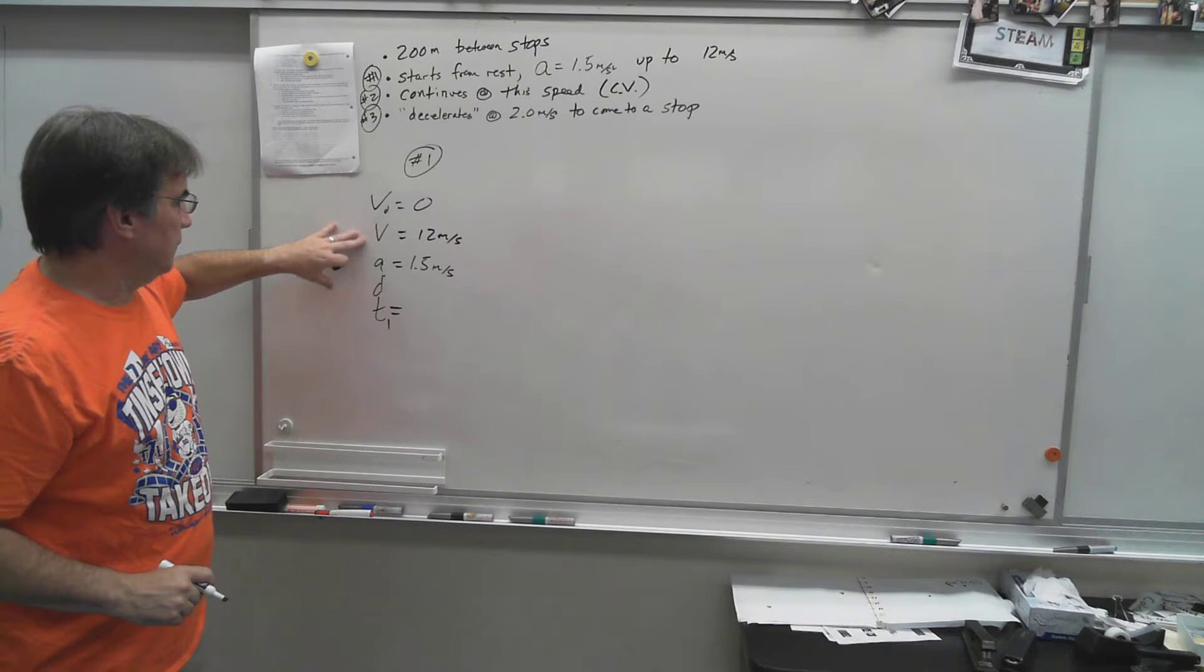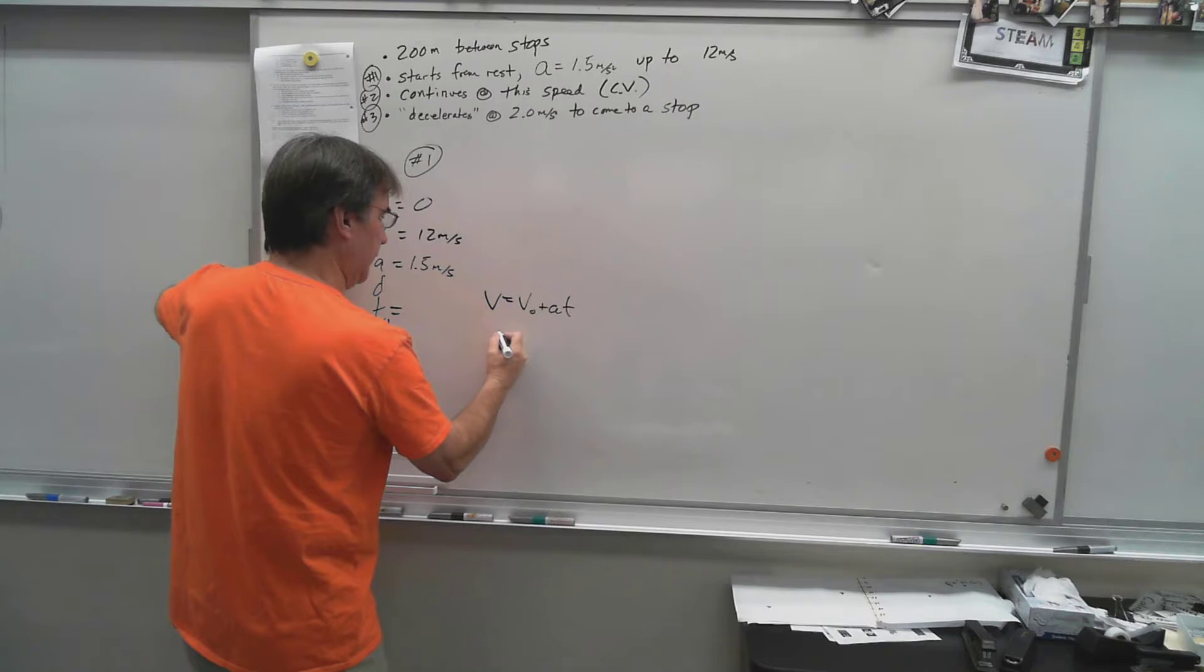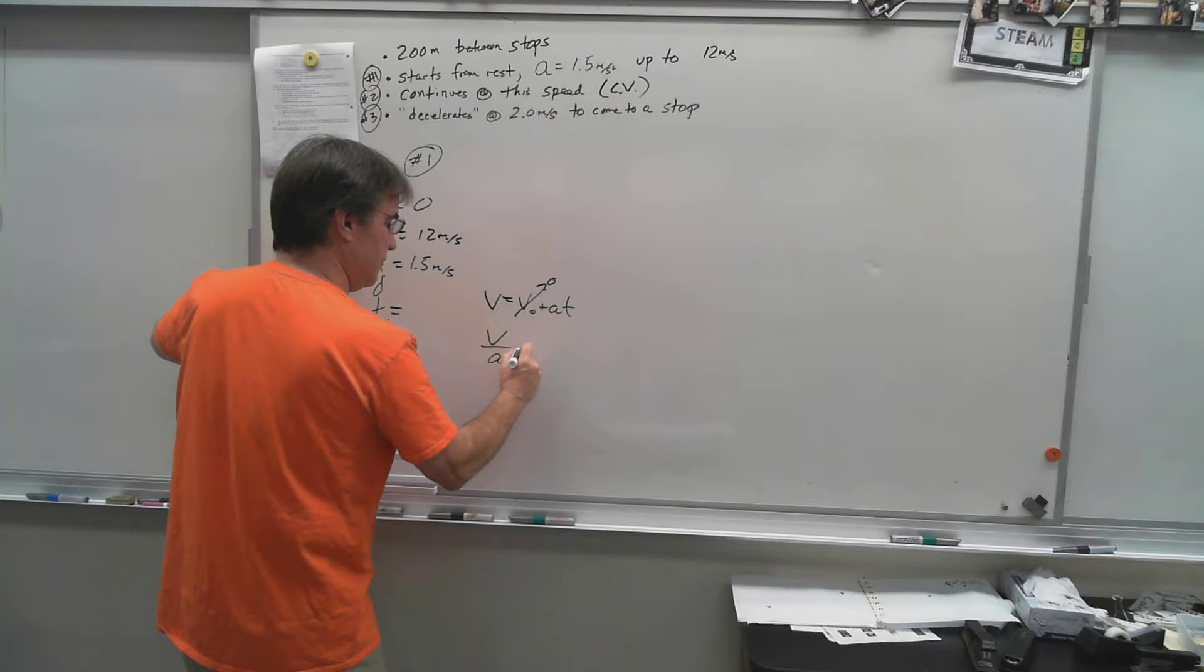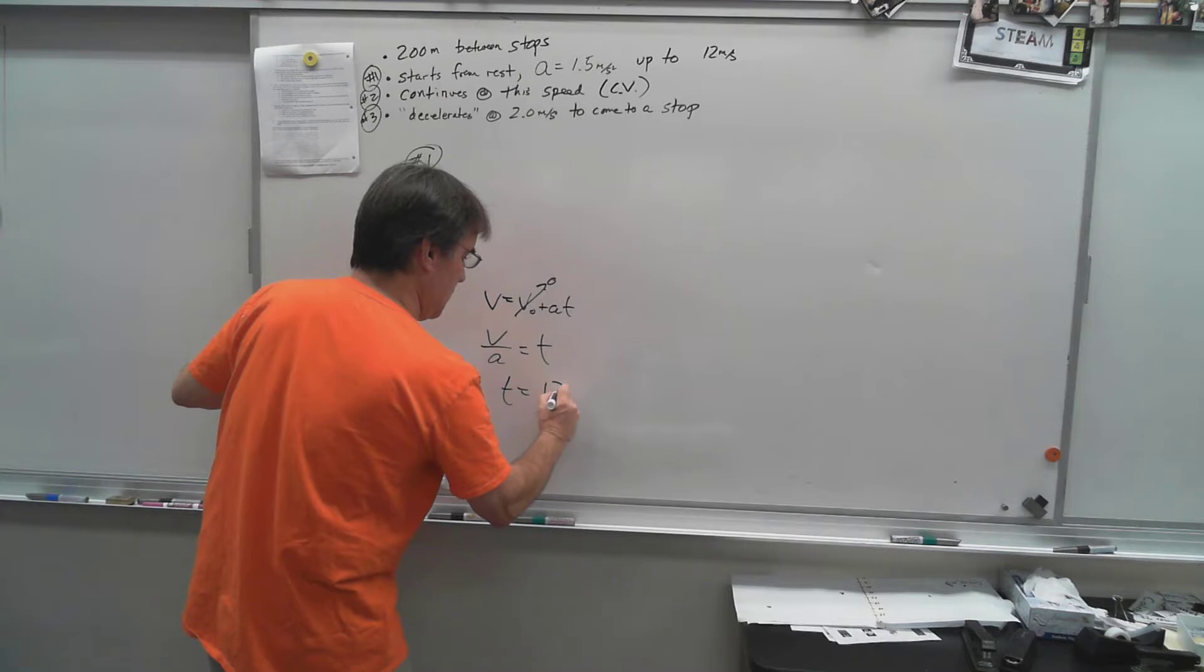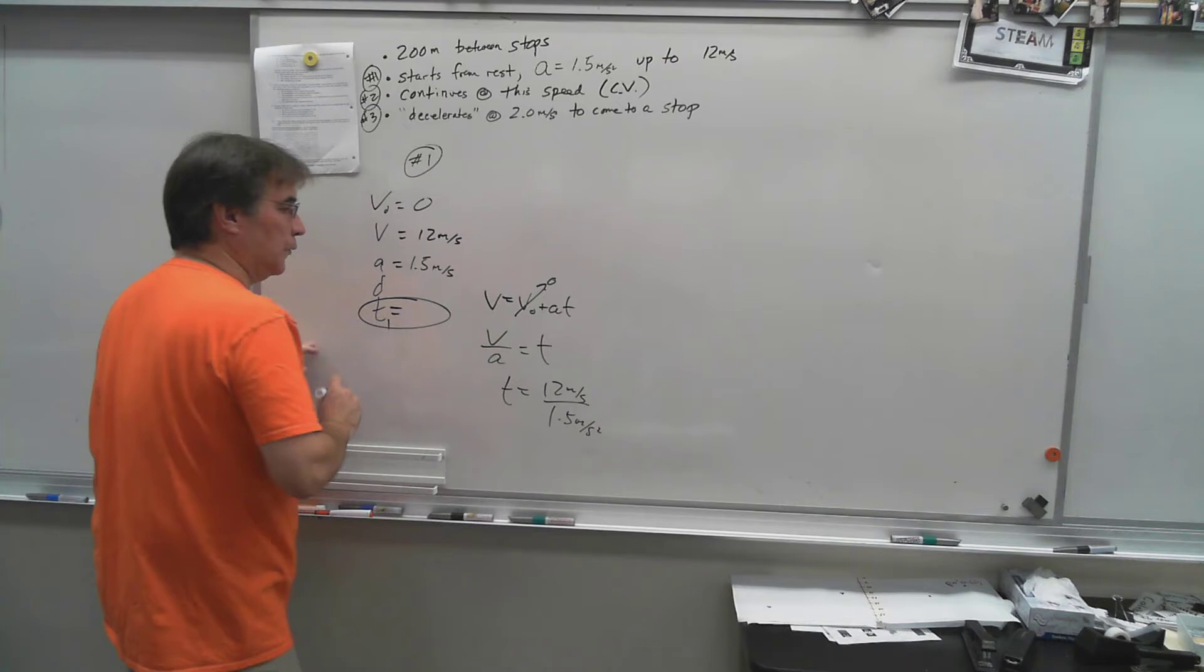I can then say, my t1 is gonna be v equals v naught plus at. I can throw that away already, so my final velocity divided by the acceleration is going to be 12 meters per second divided by 1.5 meters per second squared. You can get t1. Let's go to motion number two.